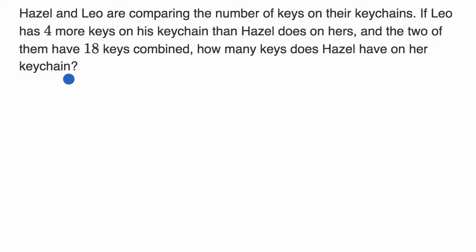Okay, now let's do it together. There are two things we don't know here. We don't know how many keys Hazel has on her key chain, and that's what they're asking us for, but we also don't know how many keys Leo has. They give us two pieces of information: Leo has four more keys than Hazel, and they have 18 keys combined. So we can set up two equations with two unknowns.